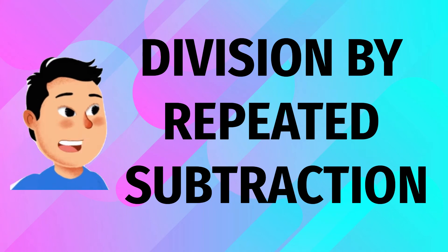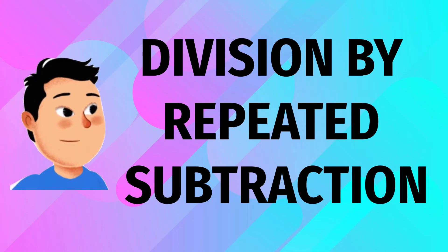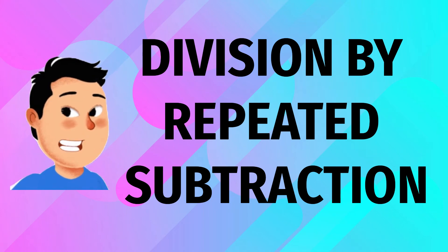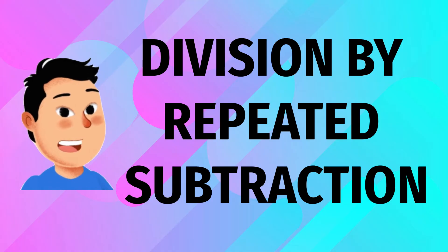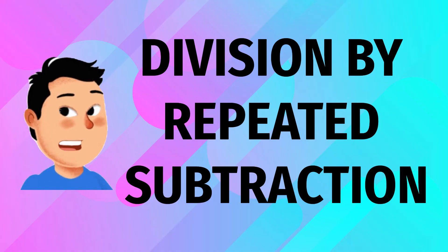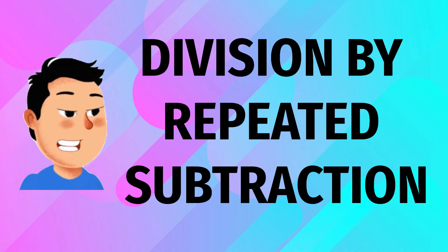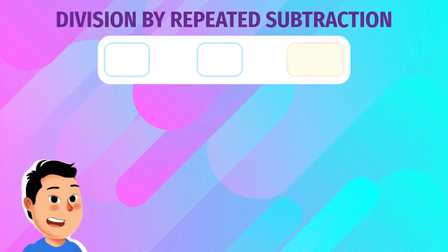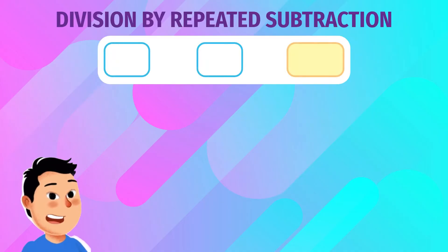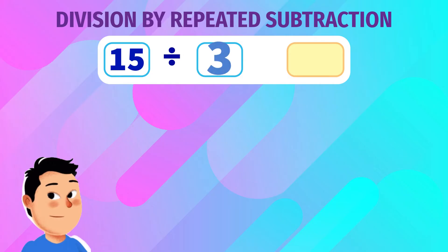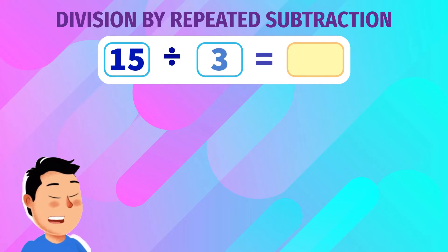In repeated subtraction, we subtract the divisor from the dividend repeatedly till we get zero. The number of steps taken to reach zero is the answer of the division. Grab a pen and paper and do the problems before you see the answers.